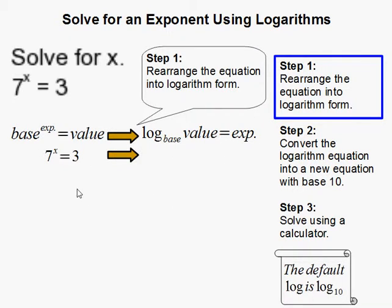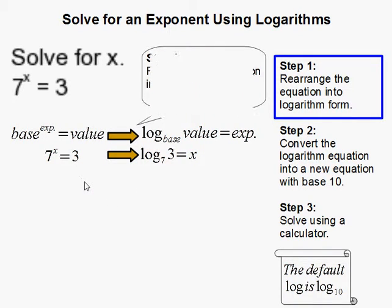So as you can see, the 7 is the base here, so that base actually goes to here, the base of the log. Right, the exponent x is on this side, this value here is the value of the log.